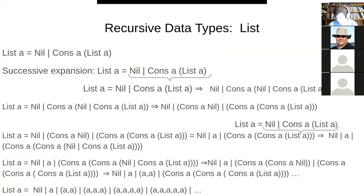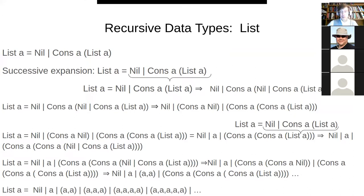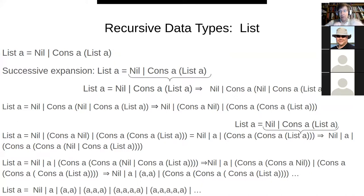That's a bit of history from the mid-eighties. You'll find all of this in the Structure and Interpretation of Computer Programs. Any final questions? We'll come back to this material next time and talk about functoriality — all these things allow automatic derivation of functors if you have functors for the lowest level.